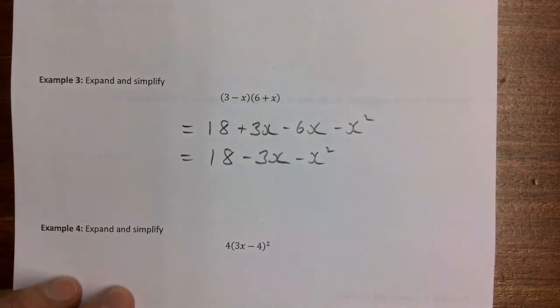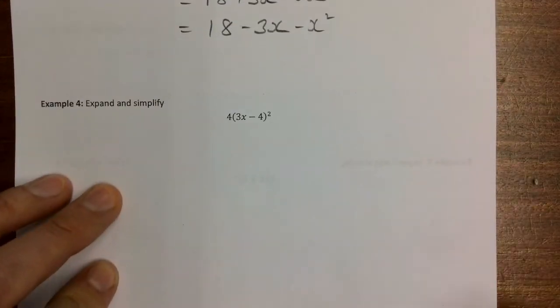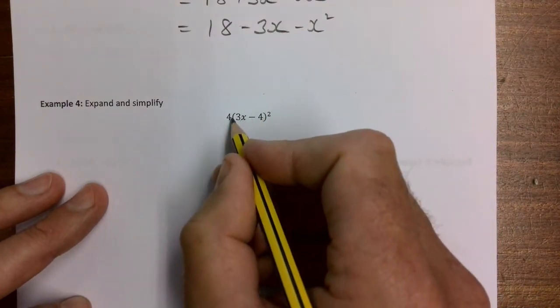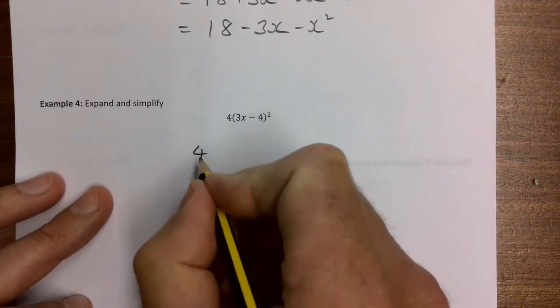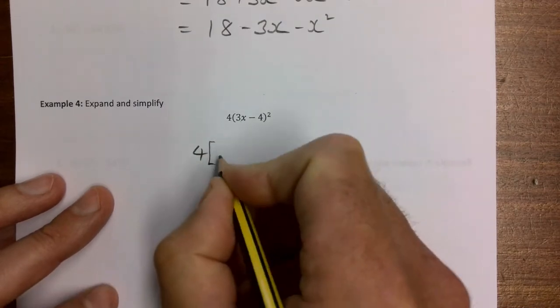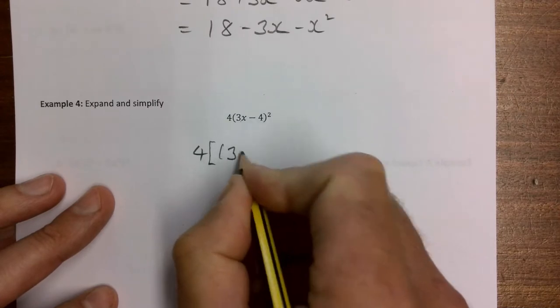Example 4: I'm going to do the bracket squared first and then times it by 4 at the end. There are other methods but I think they're messier. I'm going to make a big bracket here - hope this doesn't confuse people, I'm just making it square so you don't confuse it with the other one.